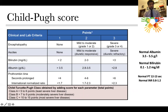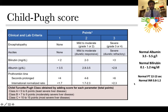For the Child-Pugh score, bilirubin is scored 1 for less than 2, score 2 for 2–3, and score 3 for more than 3 (normal bilirubin is 0.1–1.2). Albumin greater than 3.5 scores 1, 2.8–3.5 scores 2, less than 2.8 scores 3 (normal albumin 3.5–5.5). PT prolongation of less than 4 seconds scores 1, 4–6 seconds scores 2, more than 6 seconds scores 3 (normal PT is 12–13 seconds). Total scores of 5–6 = Class A, 7–9 = Class B, 10–15 = Class C.